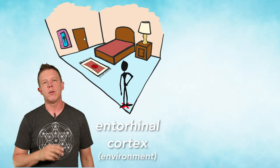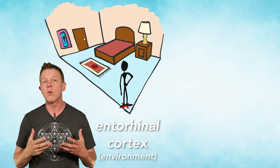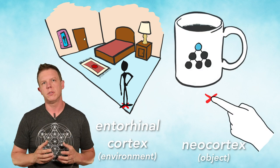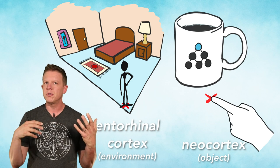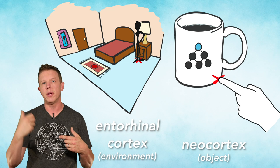Similar to how grid cells in entorhinal cortex model your environment, we think that grid cells in the neocortex are modeling objects. Both things have features, which might be a sub-object. Think of the handle on a cup or the rug in Aunt Virginia's room.